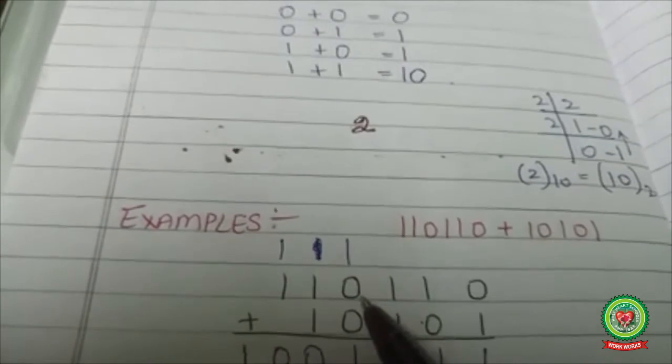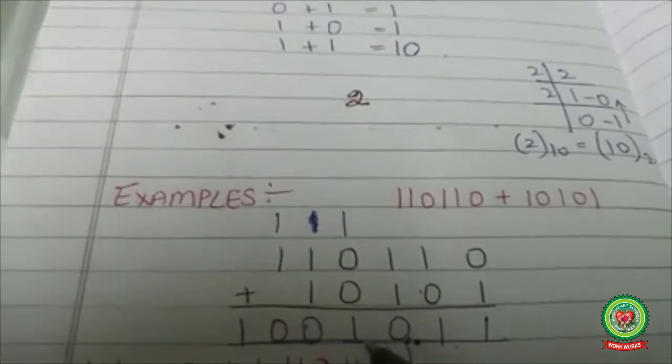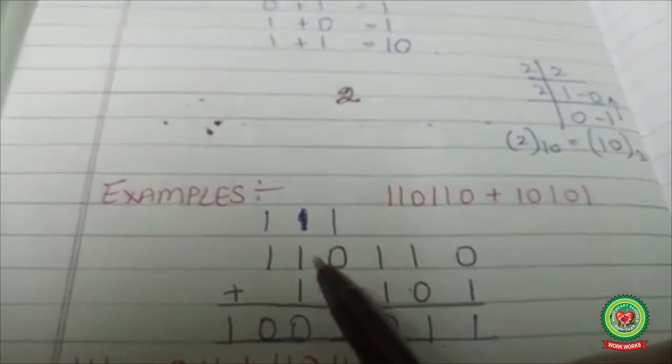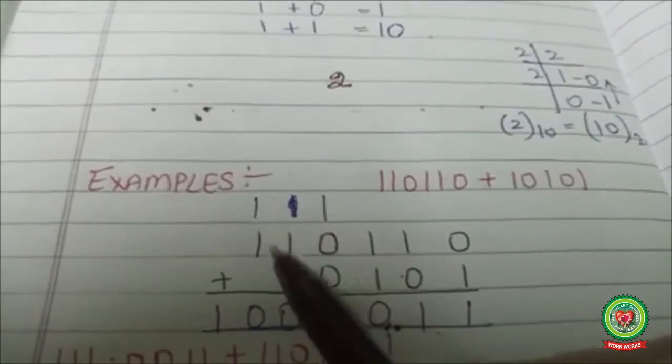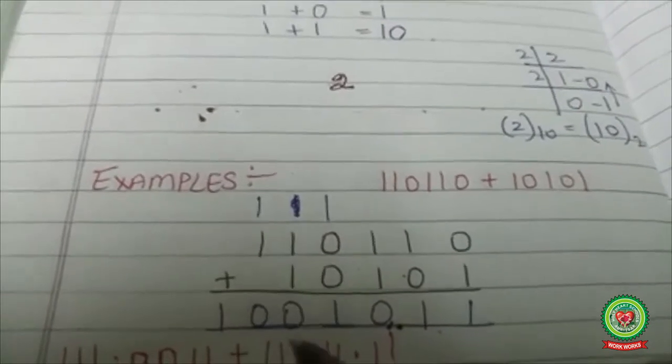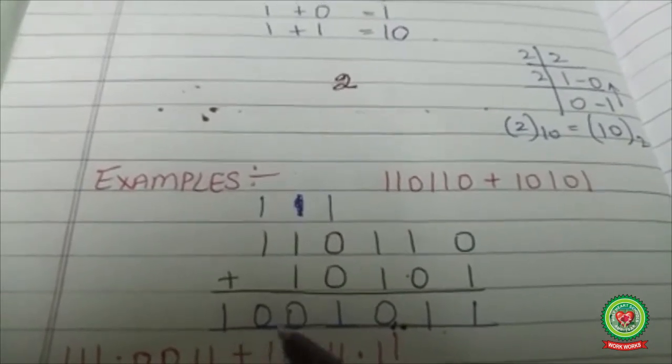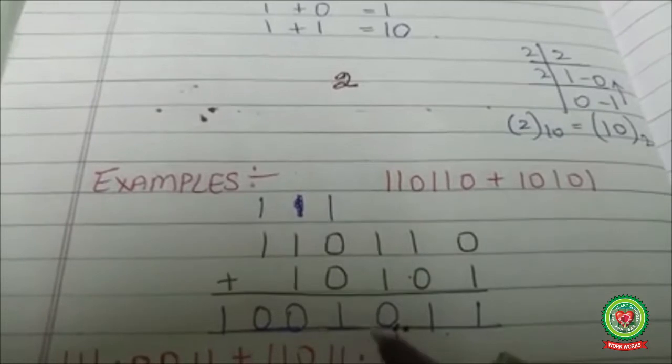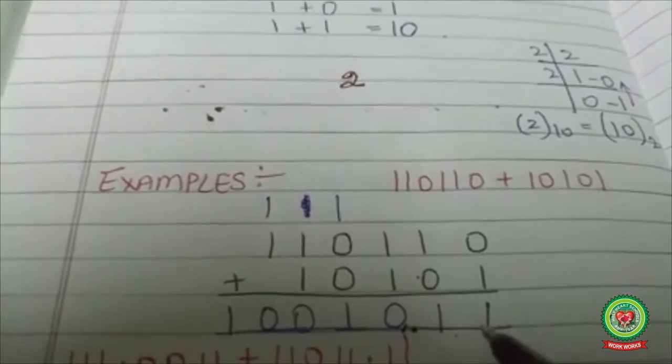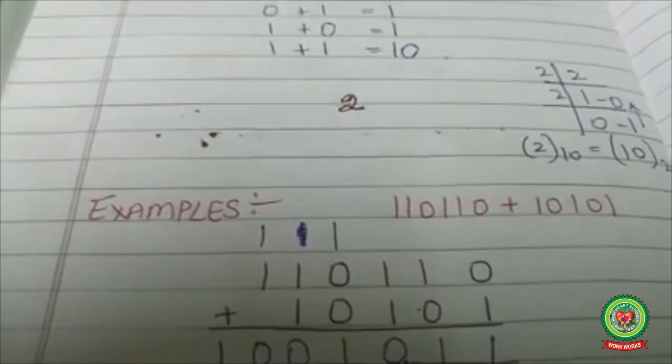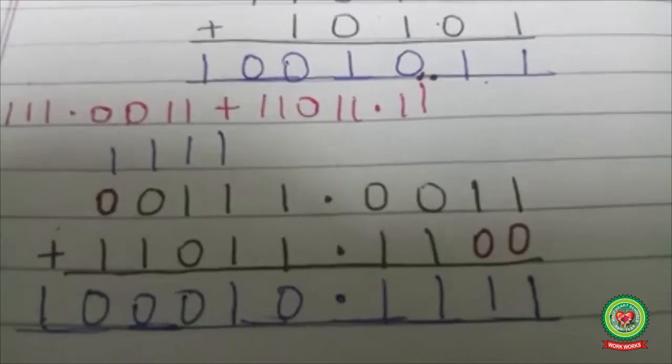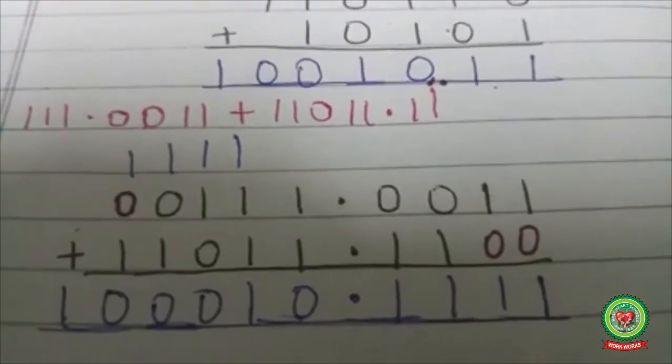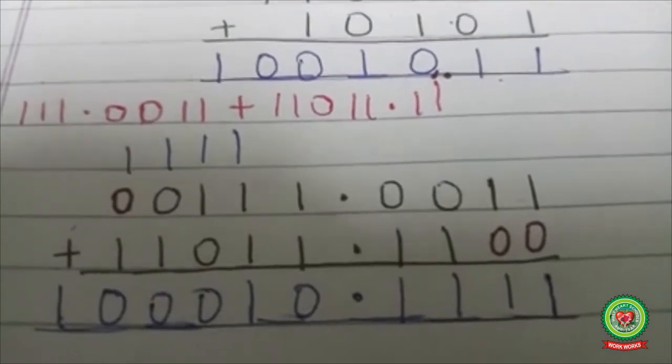1 plus 1 plus the carry of 1 gives 11. Continuing this pattern, 1 plus 1 is 10. So the answer is 1001011. This way you are going to perform binary addition.